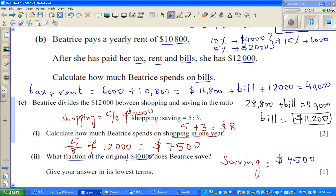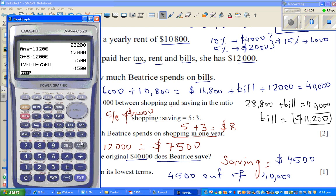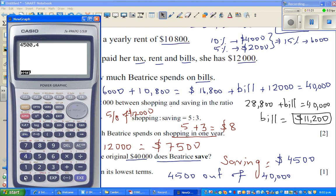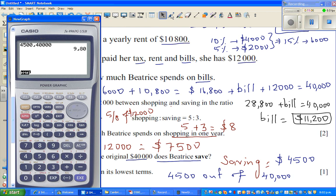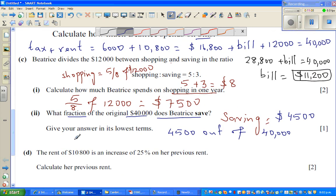What fraction of the original $40,000 does Beatrice save? She is saving $4,500 out of $40,000. So you want to write this as a fraction. There's a fraction key on the calculator. So it's $4,500 ABC $40,000. It simplifies for you. It's 9 out of 80. As a fraction, the answer is 9/80.